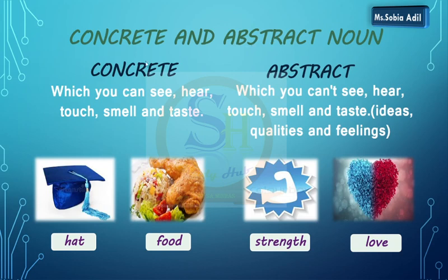Concrete noun — aap ise material noun bhi keh sakte hain. These are things which you can see, hear, touch, smell and taste. Aise cheezohn ke naam hain jinko aap touch kar sakte hain, smell kar sakte hain, taste kar sakte hain. For example, hat — you can touch it, you can wear it. Food — food can be smelt, food can be tasted.